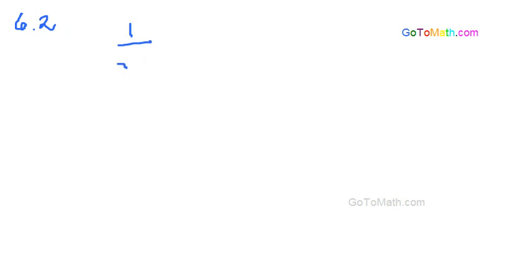Let's say that we have 1 over the square root of 7. And we're going to be asked to rationalize the denominator. Rationalize means we want to get this radical out of the denominator.